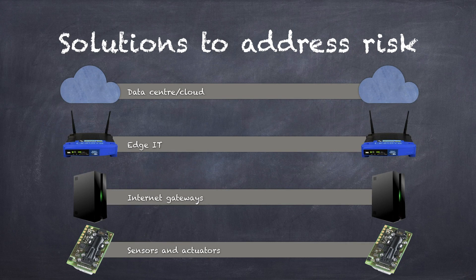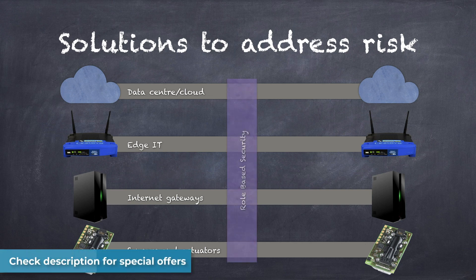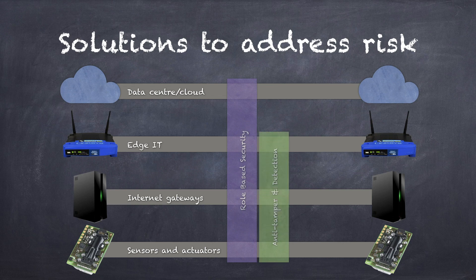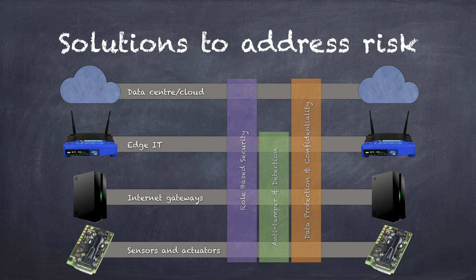Some domains to consider when approaching data privacy include: role-based security — the idea of short-term ephemeral credentials used to govern permissions, as an alternative to assigning every device unique login credentials; anti-tamper detection, covered earlier in the chapter on physical security, which reduces the attack surface and detects when a device has been tampered with; data protection and confidentiality, i.e., encryption — refer back to the earlier chapter on data protection; and network protection, which prevents unauthorized access to data as it travels through your system.